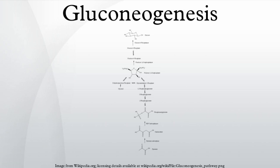In mammals, gluconeogenesis is restricted to the liver, the kidney, and possibly the intestine. However, these organs use somewhat different gluconeogenic precursors. The liver uses primarily lactate, alanine, and glycerol, while the kidney uses lactate, glutamine, and glycerol. Propionate is the principal substrate for gluconeogenesis in the ruminant liver, and the ruminant liver may make increased use of gluconeogenic amino acids such as alanine when glucose demand is increased. The capacity of liver cells to use lactate for gluconeogenesis declines from the pre-ruminant stage to the ruminant stage in calves and lambs. In sheep kidney tissue, very high rates of gluconeogenesis from propionate have been observed.